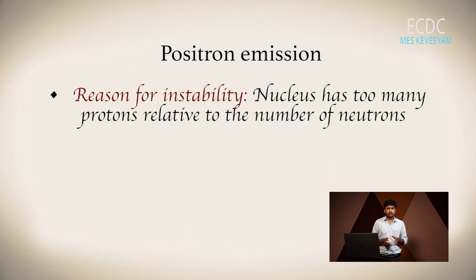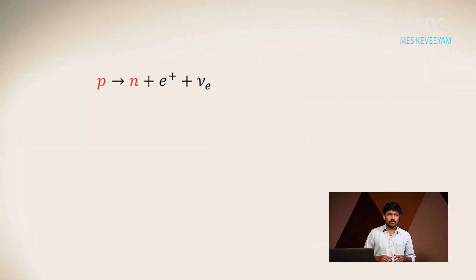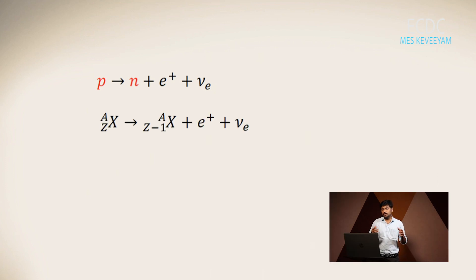In positron emission, the number of protons will be higher compared to the number of neutrons. If this is the basis of instability, then this process will occur. The equation is: proton gives neutron plus positron plus neutrino. The number of protons will reduce by one, so the atomic number will reduce by one.